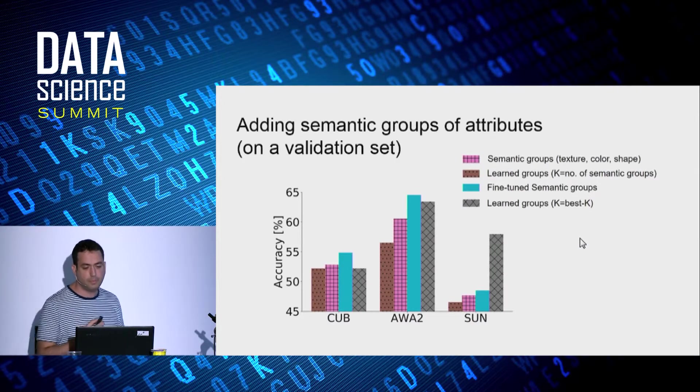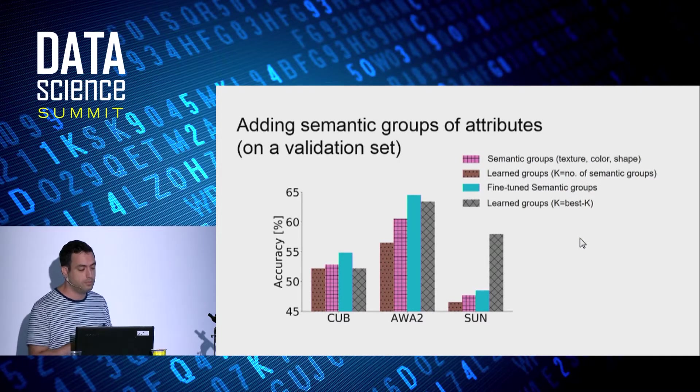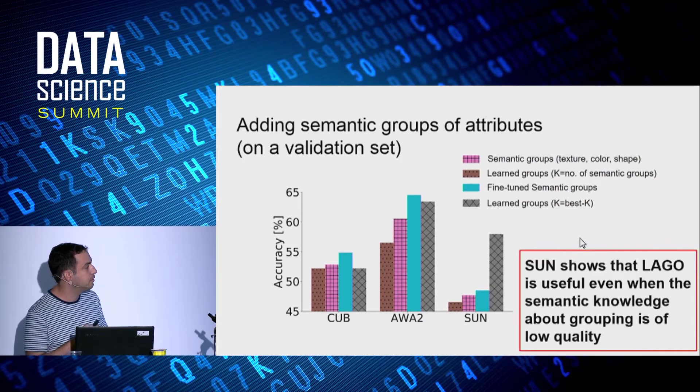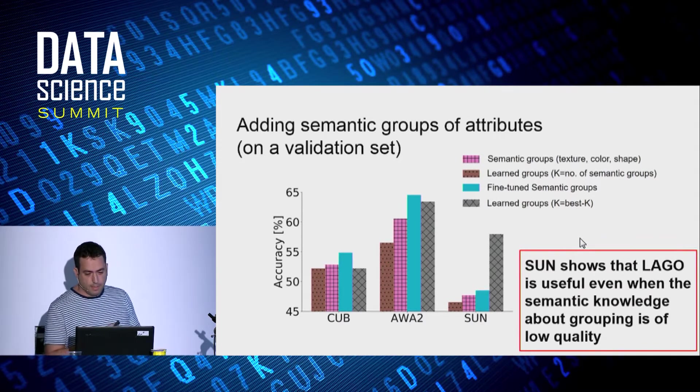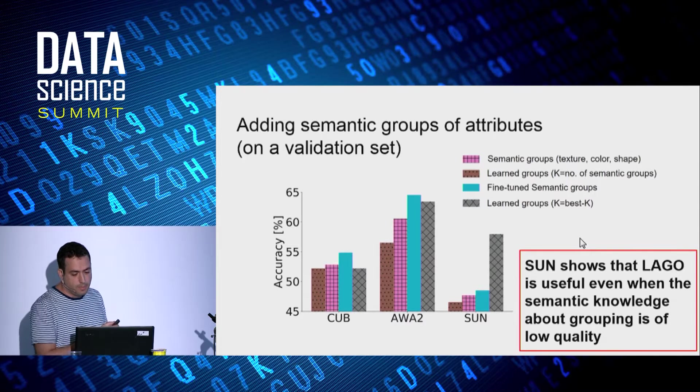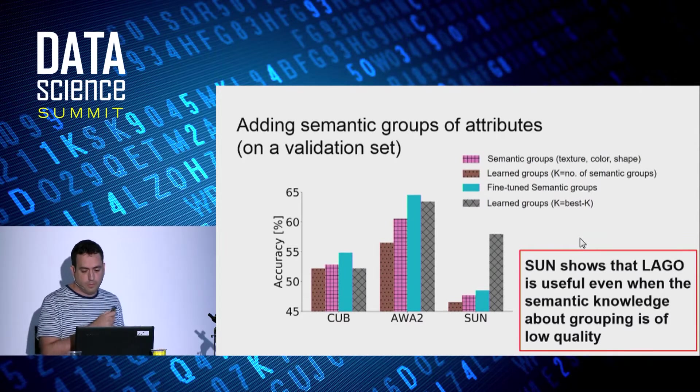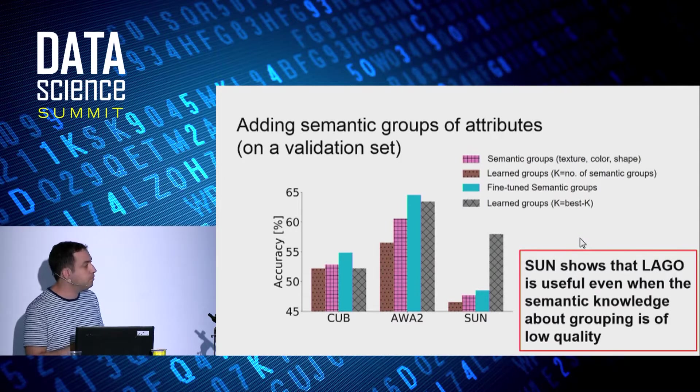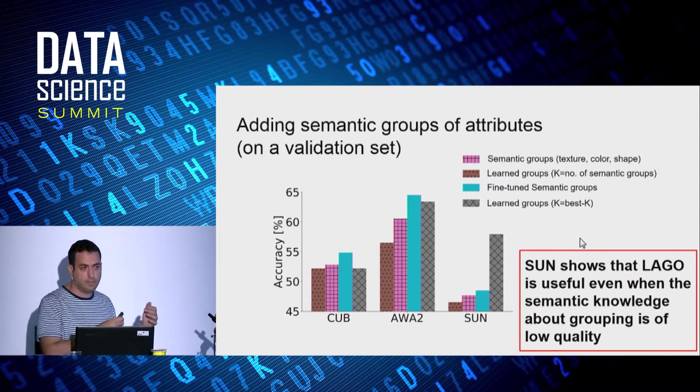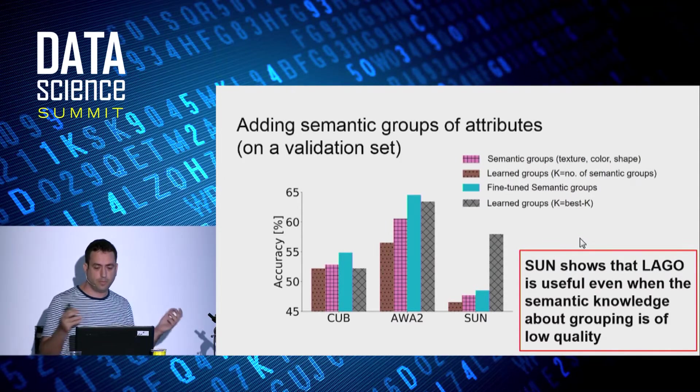So we repeat this experiment for CUB and SUN, and it shows similar results. Whereas SUN experiments show that LAGO is useful even when the semantic knowledge about grouping is of low quality, because as we said, it has four very coarse groups and 100 attributes.